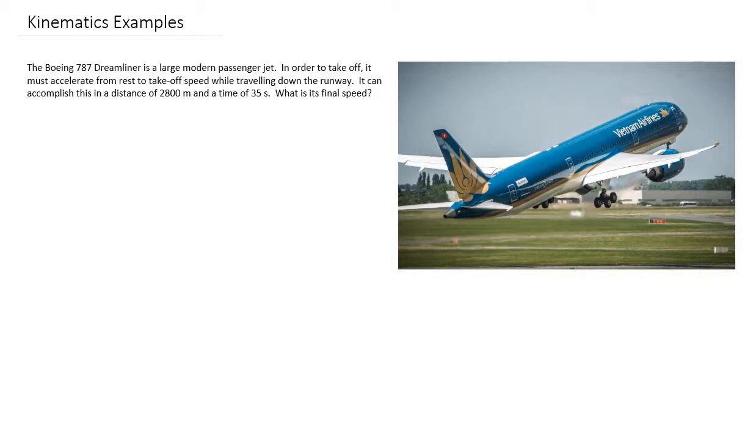The first thing you should do when you're solving kinematics equations is decide which direction you want to be positive. So in this case, we have a jet traveling down the runway. Let's just say that we want the direction of the runway to be positive. It's always good to make a note of that in your solution.